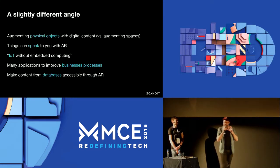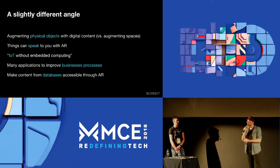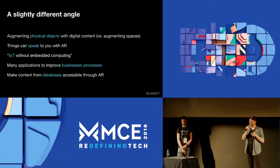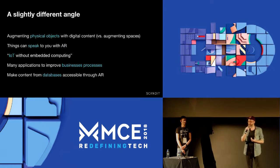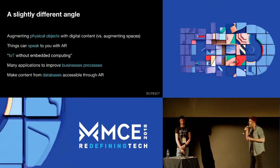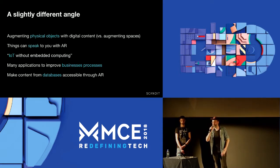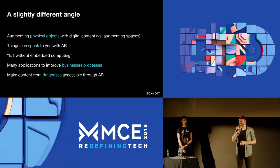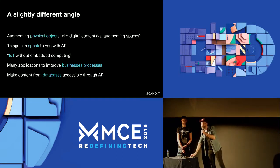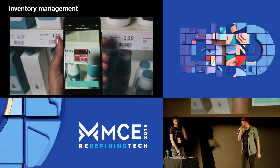There's a somewhat different angle to this as well. You can also augment physical objects with digital content, not just physical spaces. When you do that, the things around you start to speak to you — displaying digital content that lets you build IoT-like applications without actually embedding electronics. This has many applications in business processes, letting you improve efficiency. You have lots of databases in business, and all that data can be accessed through objects around you, which serve as an entry point.